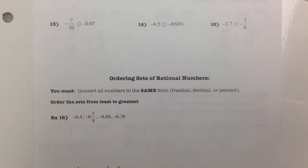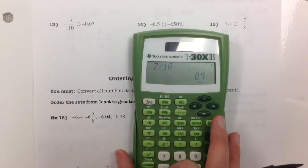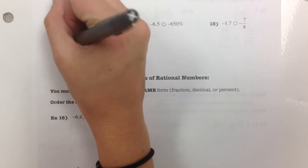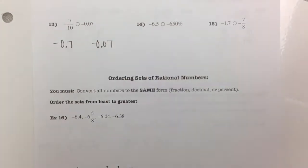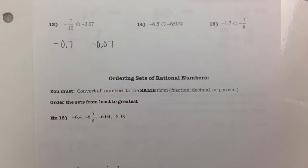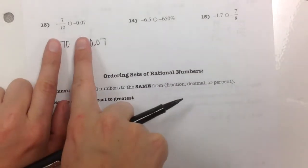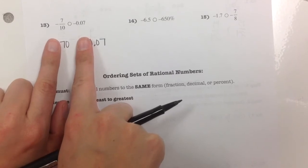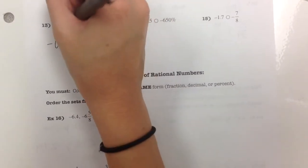Negative 7 tenths compared to negative 7 hundredths. I convert: 7 divided by 10 gives 0.7. Comparing to negative 0.07, I add a zero to get 0.70 vs 0.07. Ignoring negatives, 70 would be greater than 7. We're talking negatives, so it works in reverse — it's actually less than.